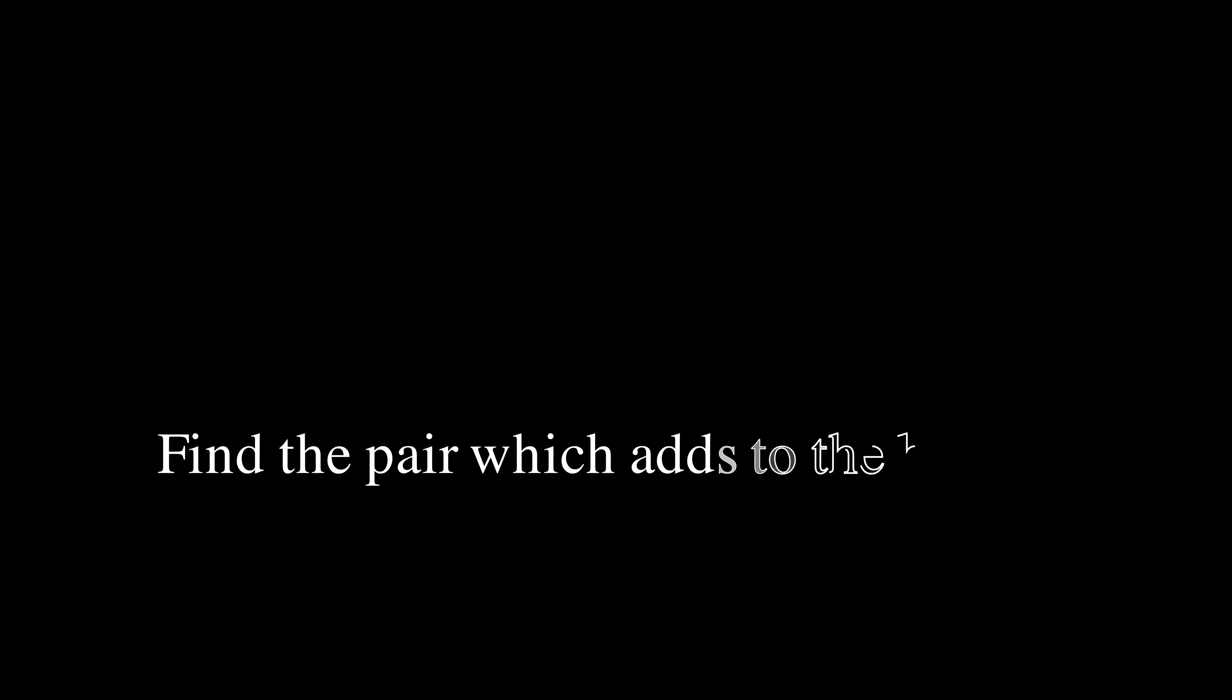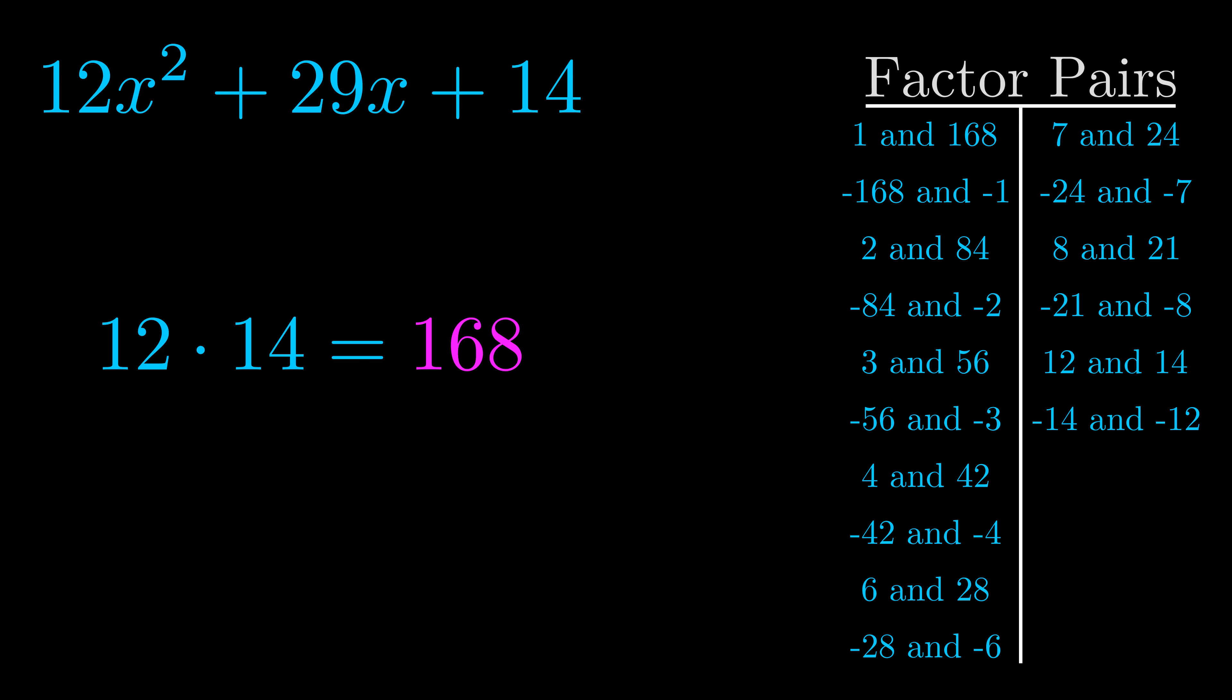The b value is the coefficient on the x term. That's the middle term, the one that we haven't done anything with yet. And really this is the only factor pair that we need.